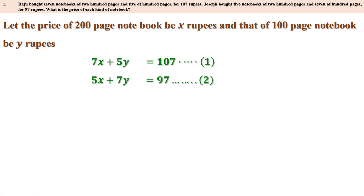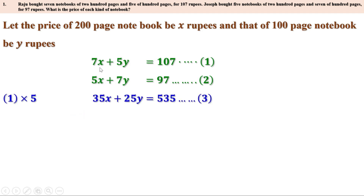Now let us multiply the first equation by 5, the coefficient of X in the second equation. 7X into 5 is 35X, 5Y into 5 is 25Y, and 107 into 5 is 535. Therefore we get 35X plus 25Y equal to 535. Let us take this as the third equation.